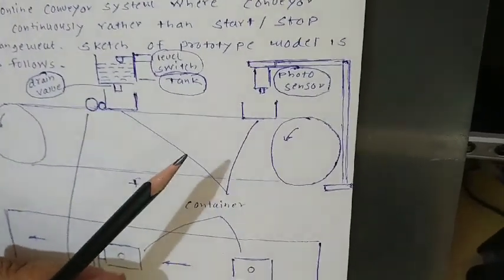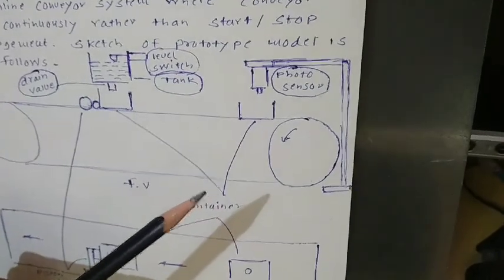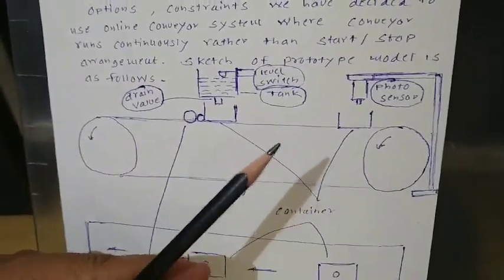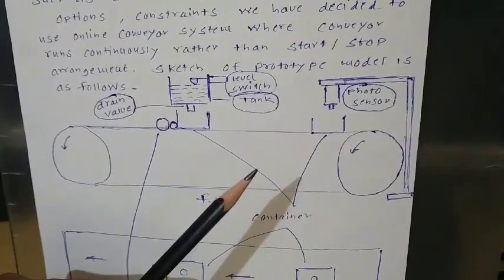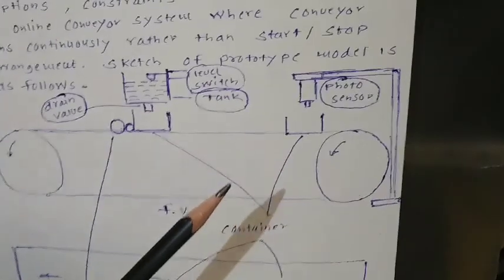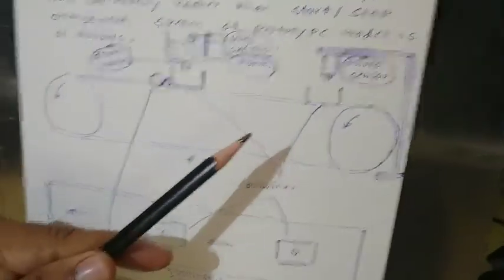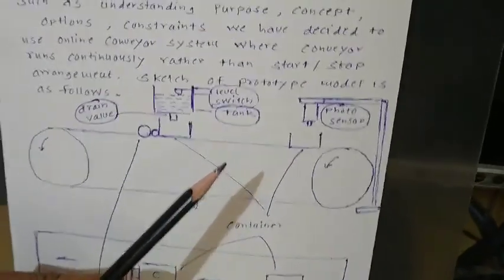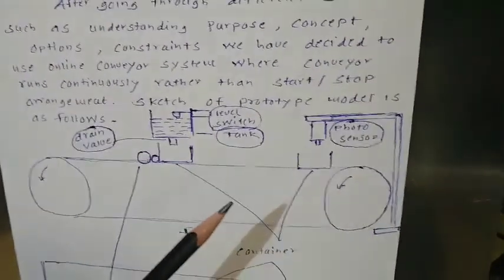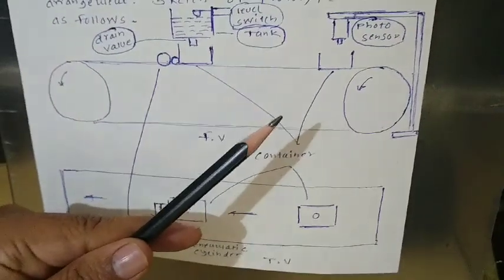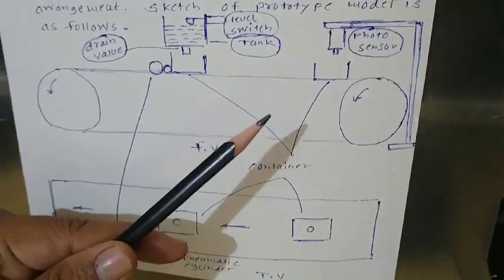There are two ways: one is a conveyor start-and-stop mechanism requiring a stepper motor, and the second is to use an AC or DC motor which runs continuously. I am going to use an AC motor. The stepper motor is very costly and I don't want to spend more on this. A cheap AC motor is available and, without stopping this particular conveyor, I can make sure that every time the container will stop.